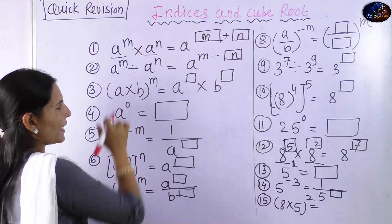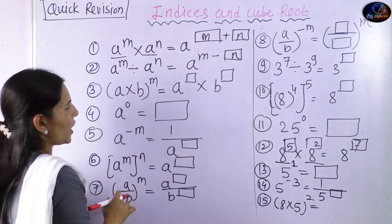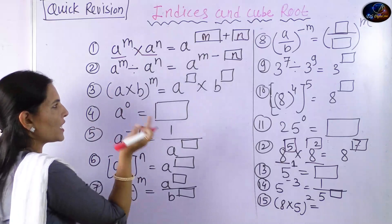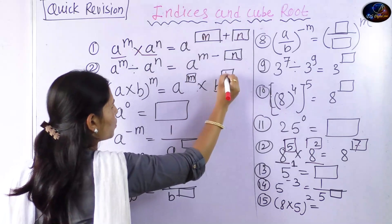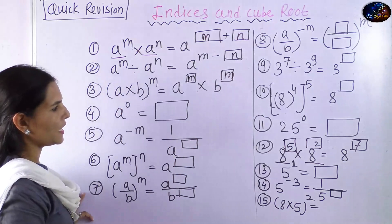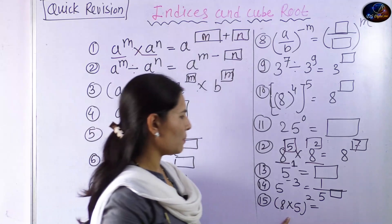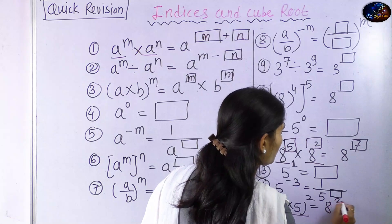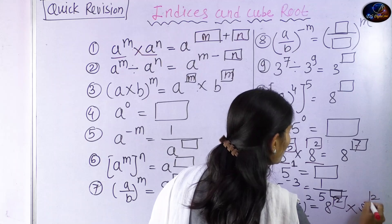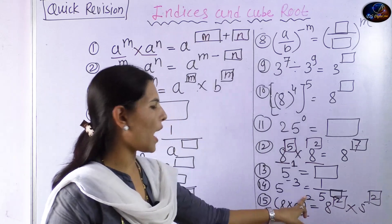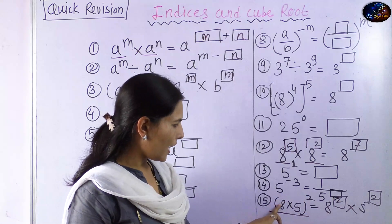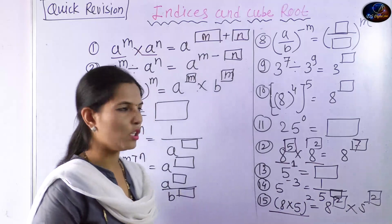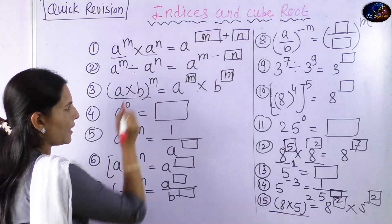Another rule: a into b, the whole bracket raised to m. This means a raised to m and b raised to m. So the answer is a raised to m and b raised to m. For example, 8 into 5, the whole raised to 2, gives us 8 raised to 2 and 5 raised to 2.